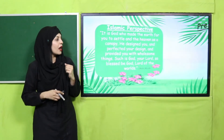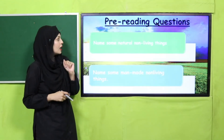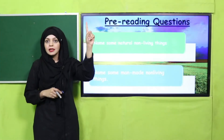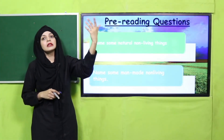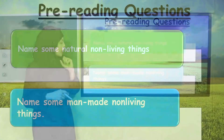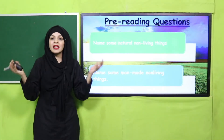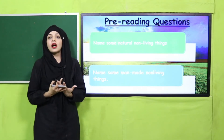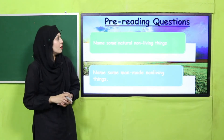From here, let's answer pre-reading questions. Name some natural non-living things: Sun, air, water, land. Name some man-made non-living things: books, computers, pencils, pens, chairs, tables, fans, AC — all man-made non-living things.